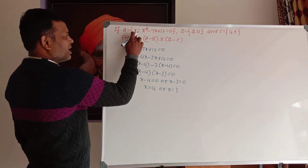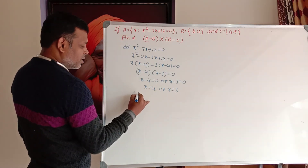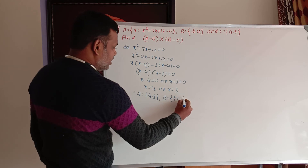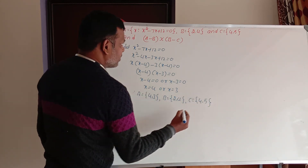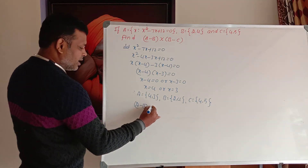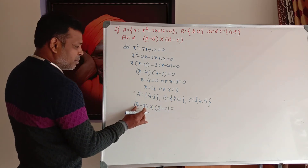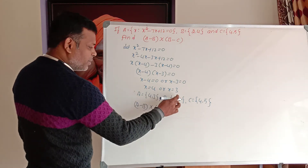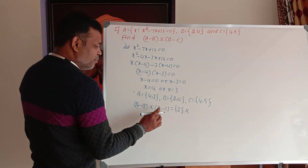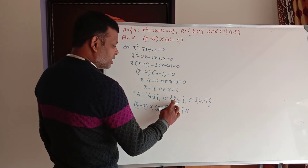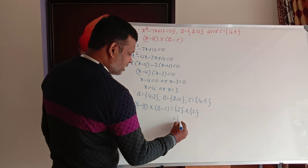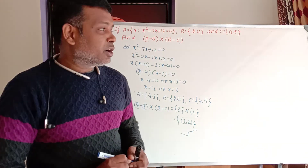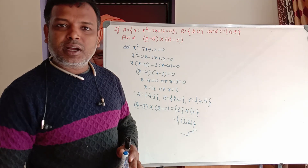Therefore x equals 4 or x equals 3, so Set A equals {3, 4}. Set B equals {2, 4} and Set C equals {4, 5}. Now compute (A minus B) cross (B minus C). A minus B means elements in A not in B: removing 4, we get {3}. B minus C means elements in B not in C: removing 4, we get {2}. Therefore the answer is the single pair (3, 2). This is how we convert from rule method to tabular method.